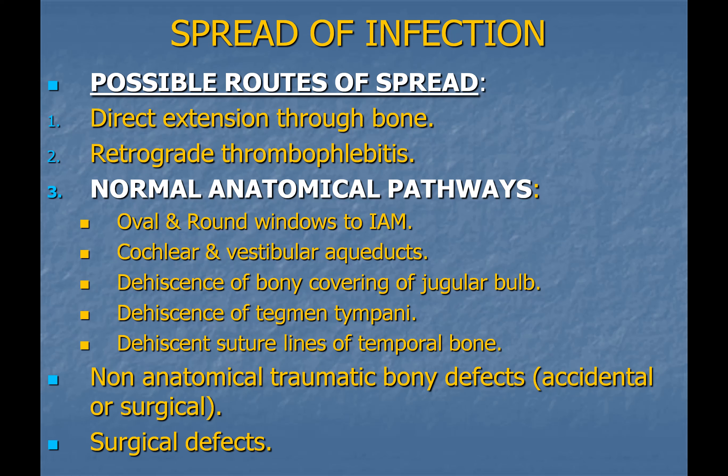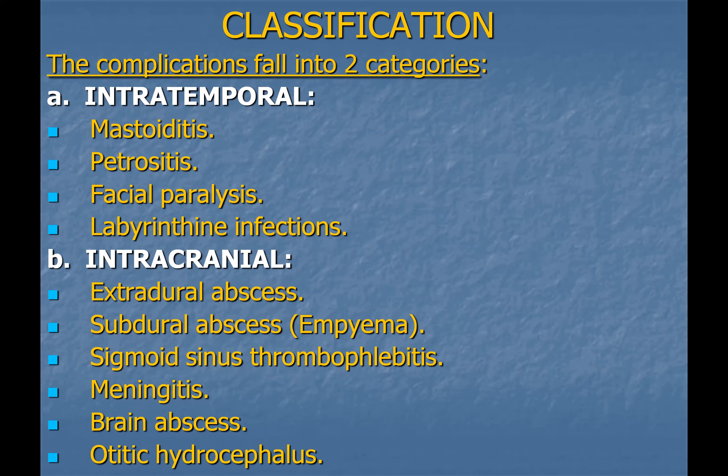Infection can spread by direct bone erosion, venous thrombophlebitis, or again through preformed pathways such as the oval or round window. Dehiscence of the bony covering of the jugular bulb or dehiscence of the tegmen tympani also allows easy transmission of infection. Complications are classified as intratemporal and intracranial. The intratemporal complications include mastoiditis, petrositis, facial paralysis, and labyrinthine infection.